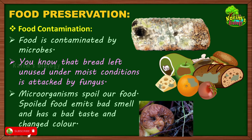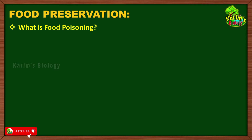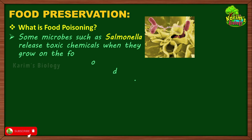When microorganisms spoil food, that food emits a bad smell, has a bad taste, and its color changes. You can see how the color of the bread changed after the growth of bread mold. We cannot consume food spoiled by microorganisms, and the reason is food poisoning. There are some microorganisms such as Salmonella and E. coli which are majorly responsible for spoiling food material.